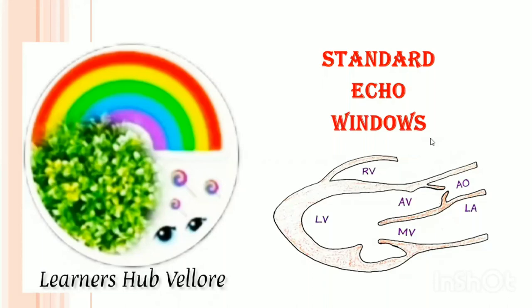Hello everyone, hope you are all doing great. In this session we will focus on standard echo windows. Standard locations on the anterior chest wall are used to place the transducer, and these are called echo windows. Let us see more about them in detail.